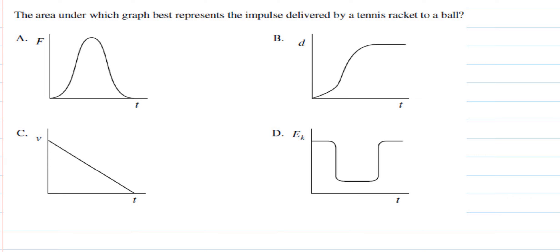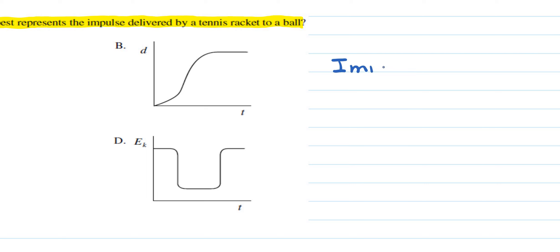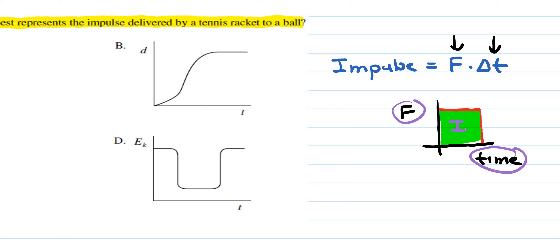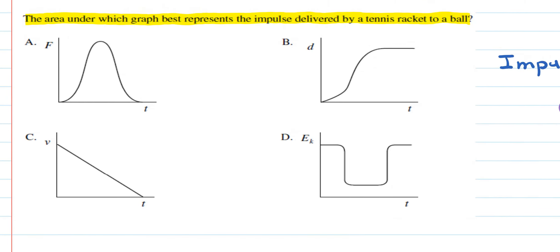For the graphing question: the area under which graph represents impulse delivered by a tennis racket to a ball? Since impulse = force × time, we want force on the y-axis and time on the x-axis. The area under that graph — length times width — equals force times time, which is impulse. The best option is option A, which has force on the y-axis and time on the x-axis.